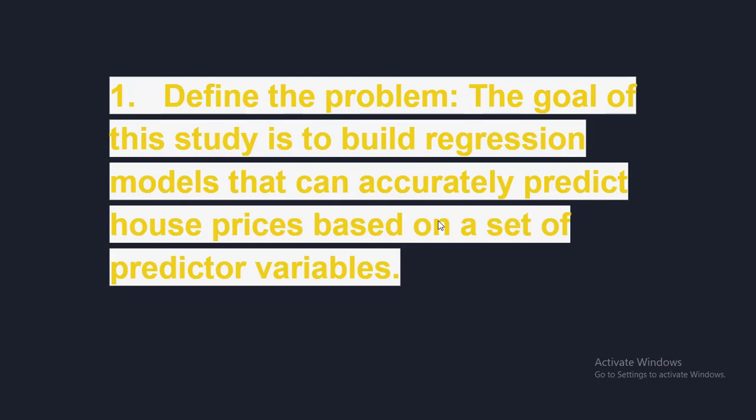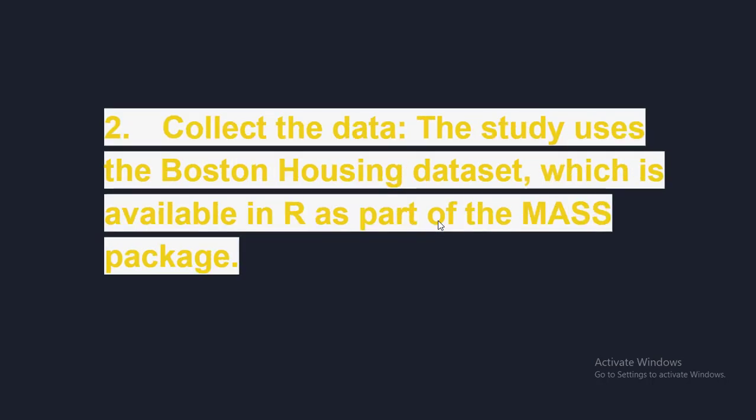Accurately predicting house prices is important because it can affect how much someone is willing to pay, how much a seller can expect to receive, and whether a lender is willing to provide a mortgage for a given property. We need to identify predictive variables most strongly related to house prices. In the Boston Housing dataset, these might include the crime rate in the neighborhood, the average number of rooms per dwelling, the distance to employment centers, and so on. Once we have identified the problem and the relevant predictive variables, we proceed to collect the data — in this case using the Boston Housing dataset, available in R.